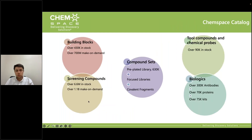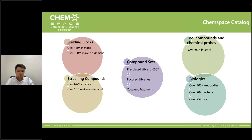The ChemSpace catalogue is fully searchable online at chemspace.com. We are the largest marketplace for small molecules and biologics, with both in-stock compounds and make-on-demand analogues. We also support customers with compound sets and tool compounds for chemical probes. Some time ago we launched biologics including antibodies, proteins, and biologics kits — all searchable online at chemspace.com.